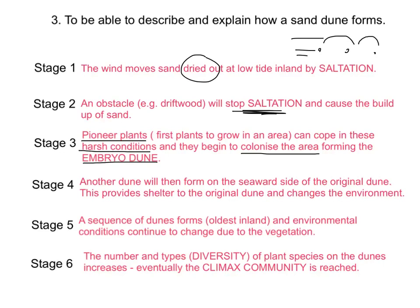Stage four: the embryo dune has developed and a new dune forms on the seaward side of the original, providing shelter and changing the environment. We are building out towards the sea. Stage five: we now have a whole sequence of dunes. The oldest will be furthest inland. Over time, different environmental conditions develop — different soil types, nutrients, water and salt content — leading to a change in vegetation.